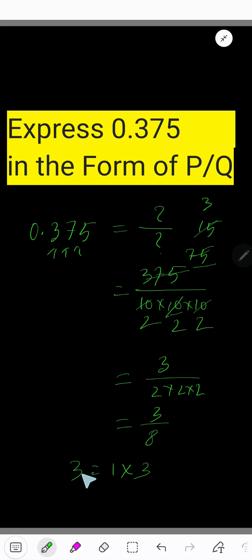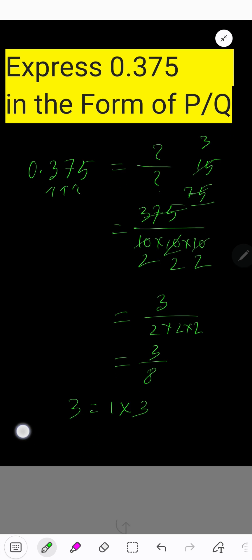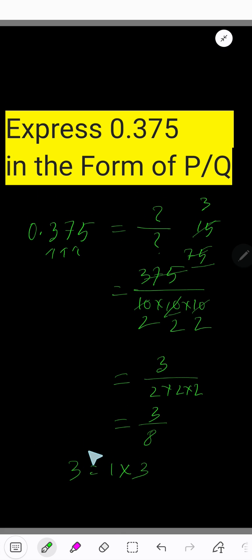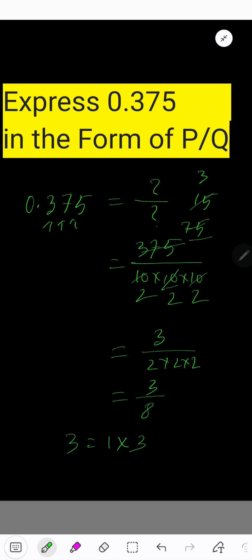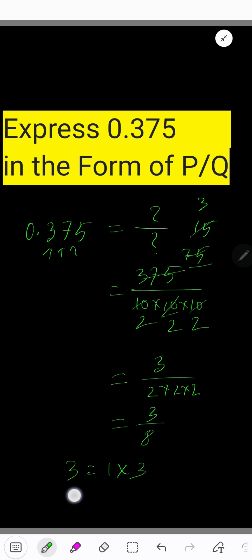Look, the factors of 3 are 1 times 3. 1 and 3 are the factors of 3. Then, 8 equals 1 times 8. There is no common factor between 3 and 8 without 1, so this is the lowest form.